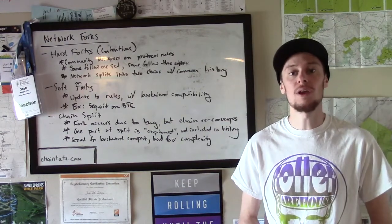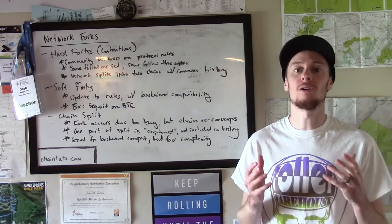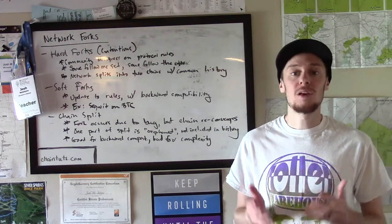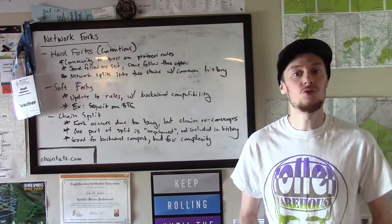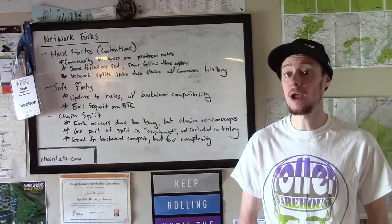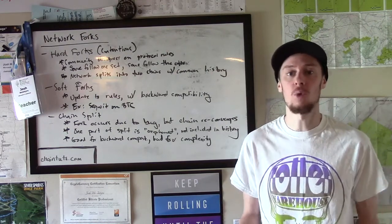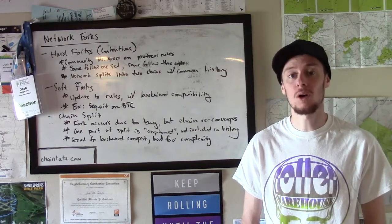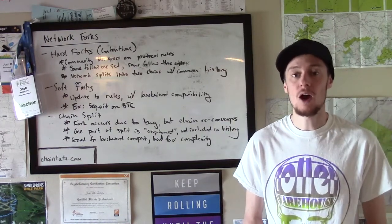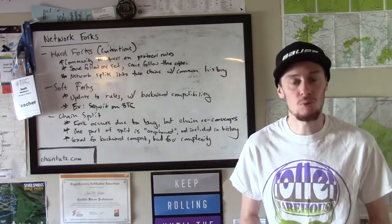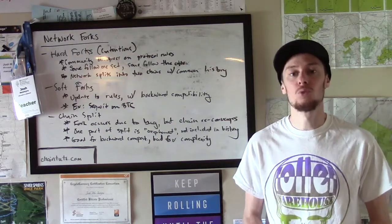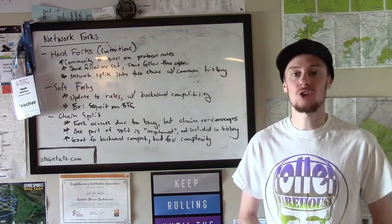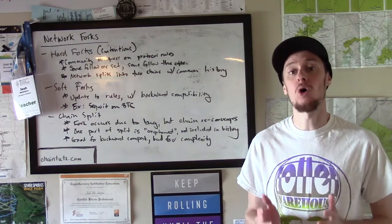The important thing to note is about following the rules. Bitcoin and other distributed public cryptocurrencies don't have any central management. There's no corporations or governments that decide what transactions are valid and invalid. So in order for this network to work in a decentralized way, we use a special protocol called the Bitcoin protocol to determine what the rules are. Miners and nodes looking at the blockchain validate transactions and ensure that they're all following the rules.